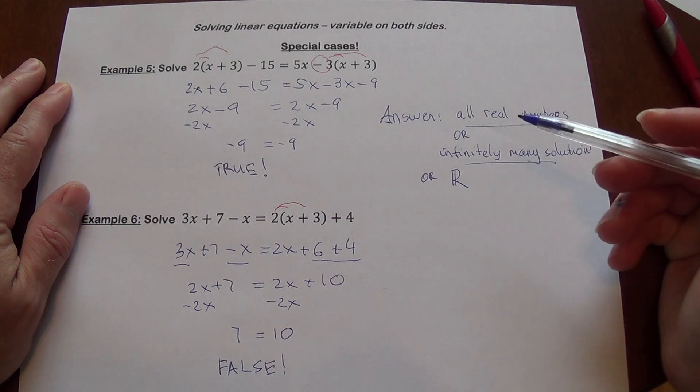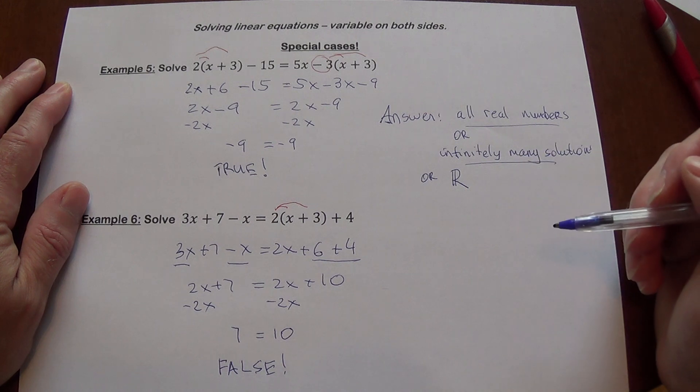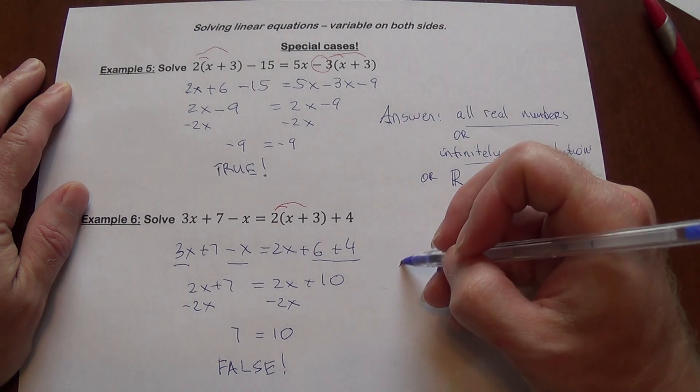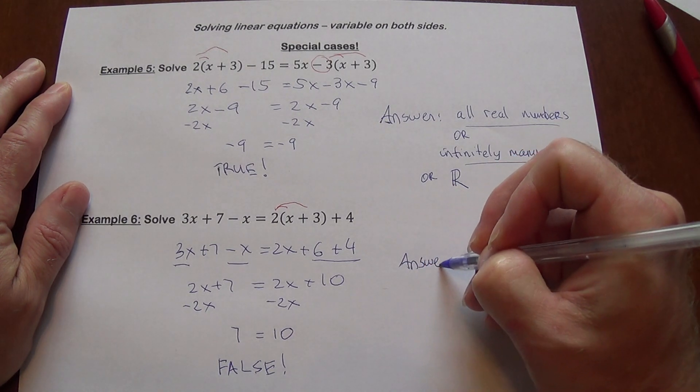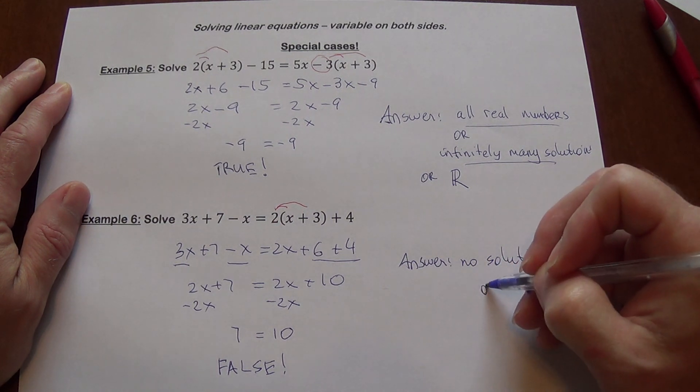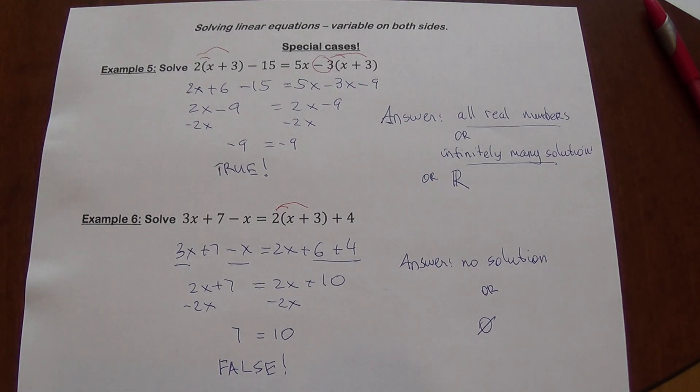So what does that tell you? That tells you that no matter what x is going to be, your equation will never have... It's not going to be possible to make the two sides equal each other because initially they are not equal. So your answer here is no solution. Or sometimes we put this symbol which represents an empty set. So I hope this helps.